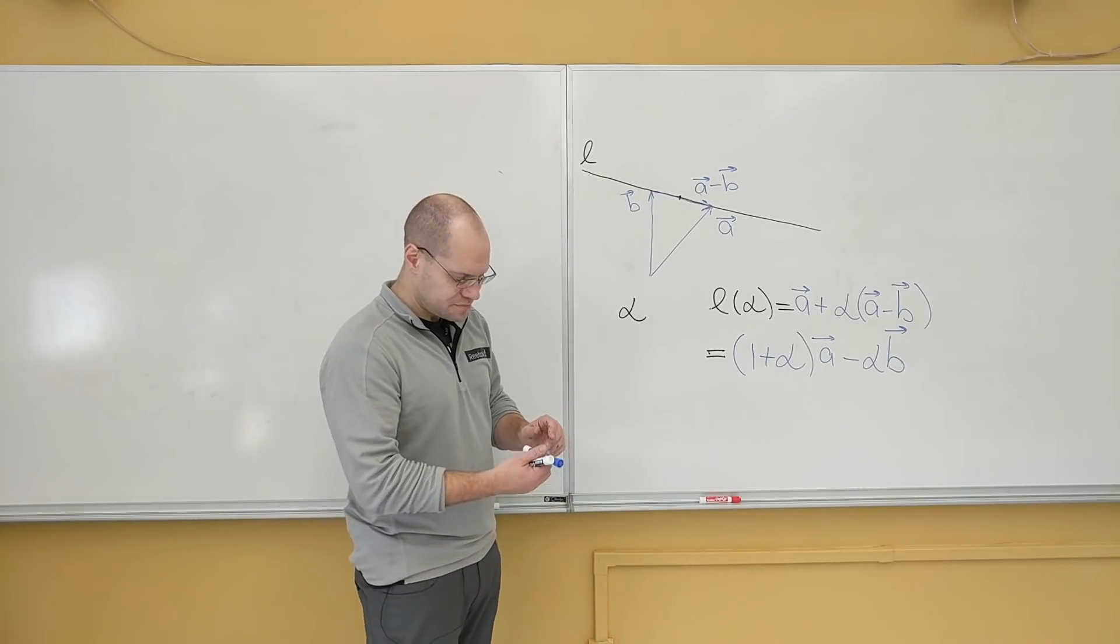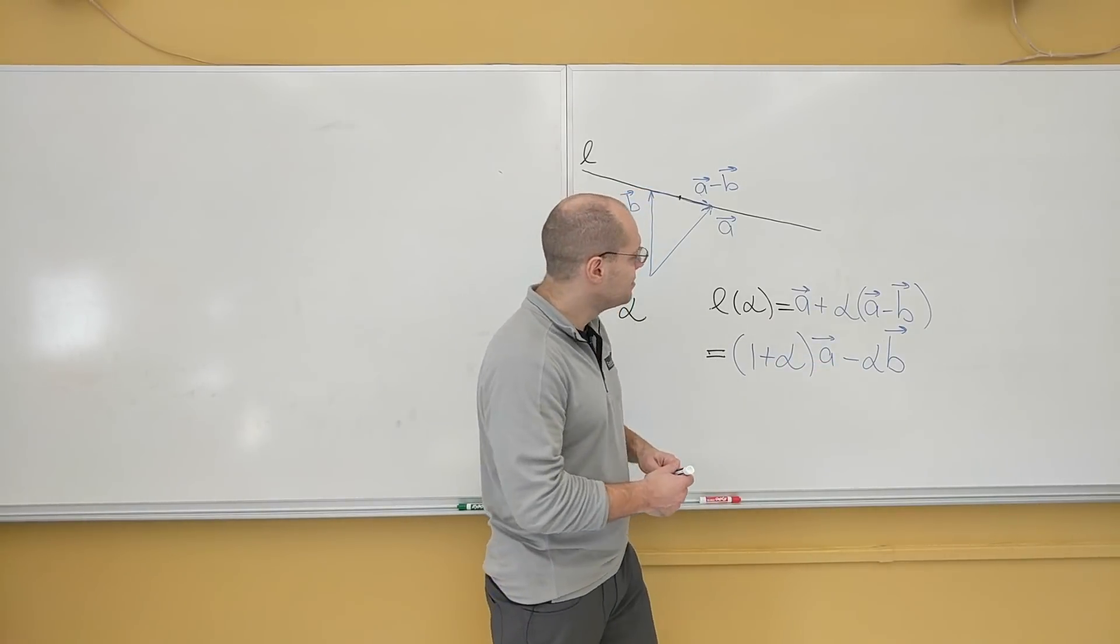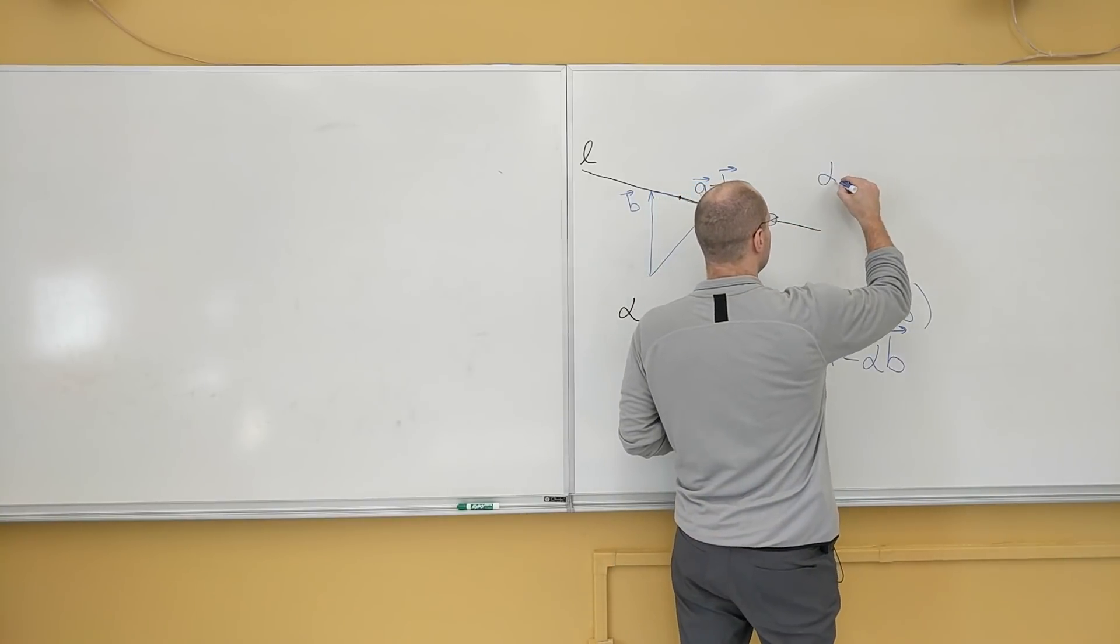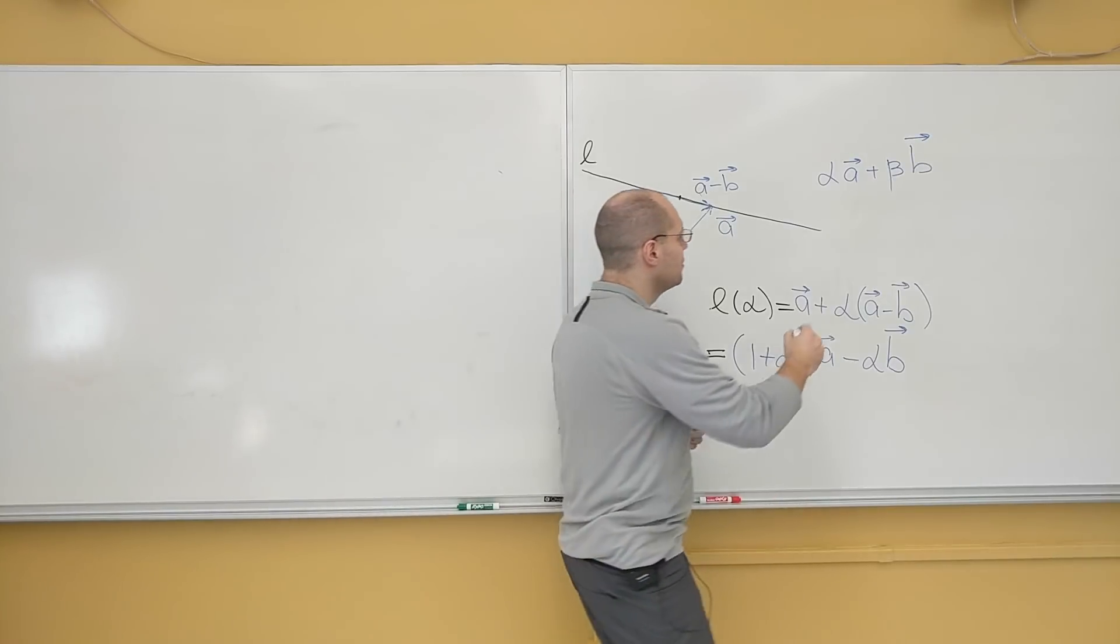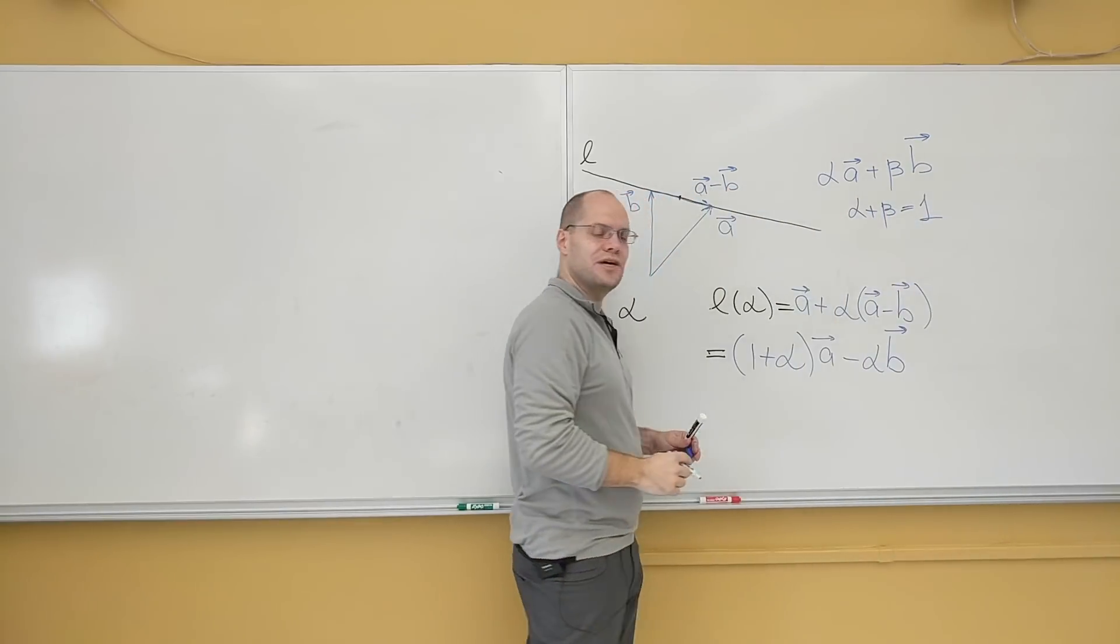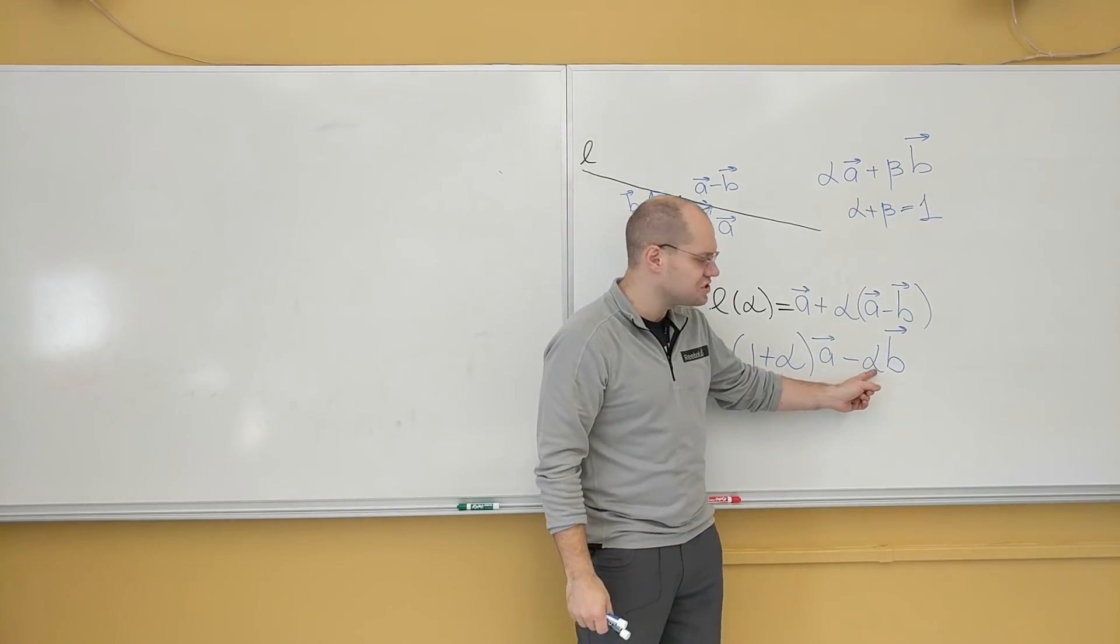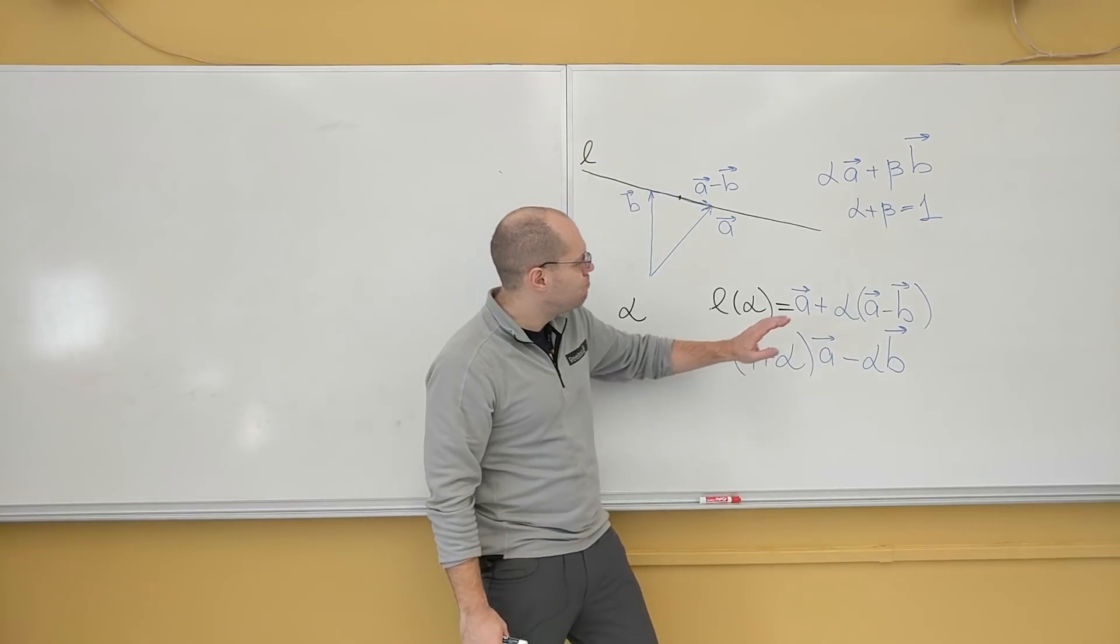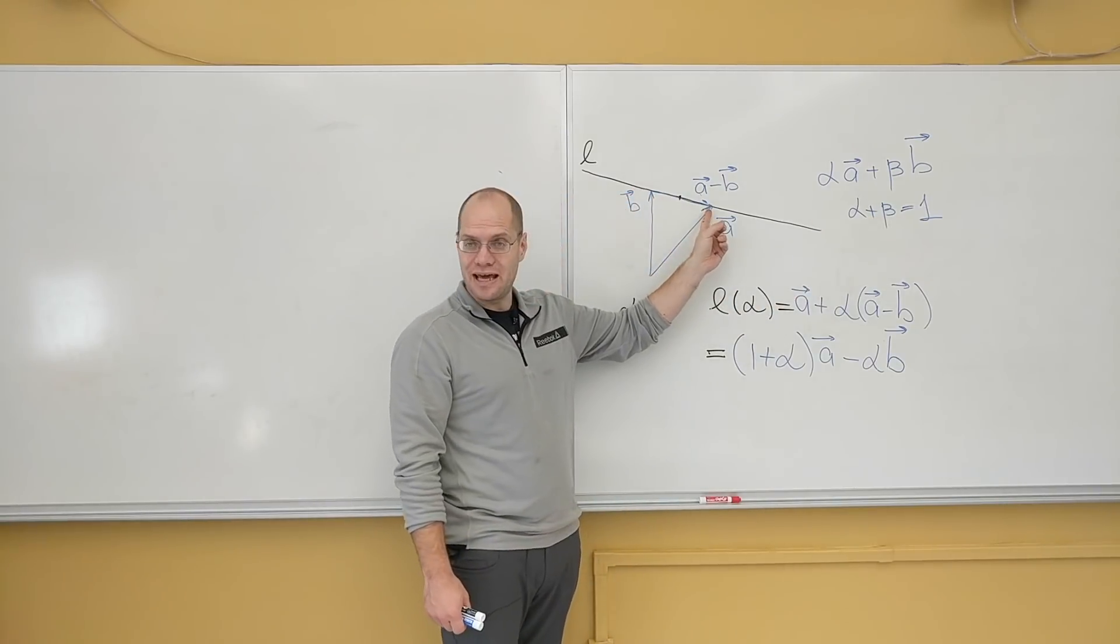But basically, what I'm trying to say, if I'm looking at expression alpha A plus beta B, there is total parity now between A and B. Where alpha plus beta equals 1, then I'm on the straight line connecting A and B. That's what we get from here. That as long as coefficients add up to 1, you're in a straight line connecting A and B. And if both coefficients are positive, then you're actually between A and B.